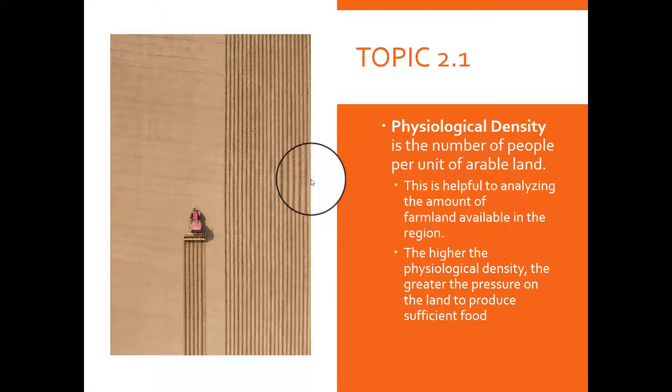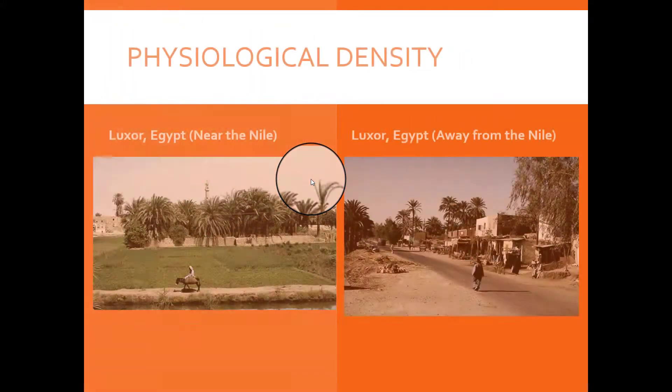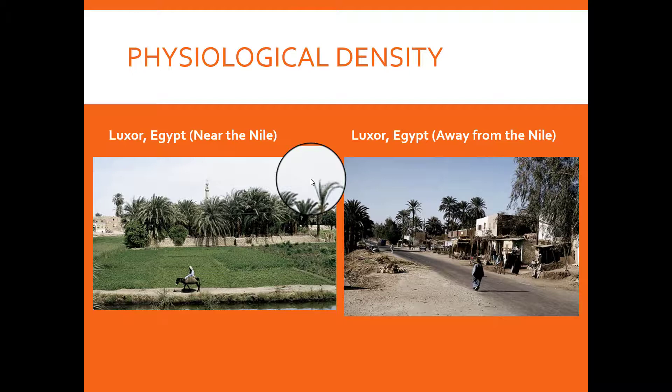Here we're talking about Egypt again. In this picture, you tell me what is the significant attribute or value here in terms of this place in Luxor, Egypt. One is near the Nile and one is away from the Nile, a couple of blocks away from the Nile. What makes it stand out here?